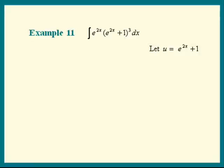Du is the derivative of that times dx. So let's differentiate e to the 2x plus 1. We get e to the 2x times the derivative of 2x, which is 2, plus the derivative of 1, that's 0. That means du is 2 e to the 2x plus 1.